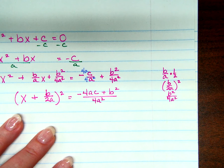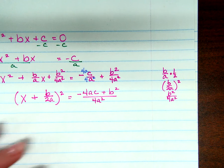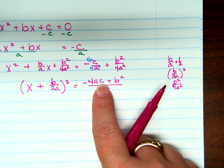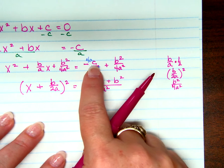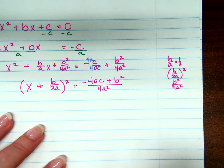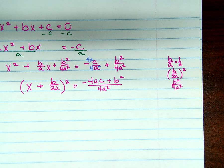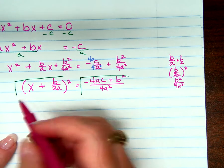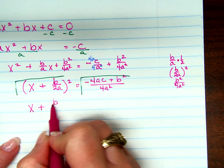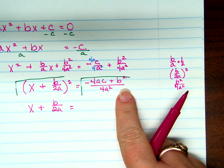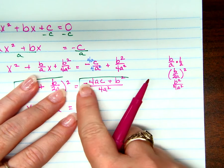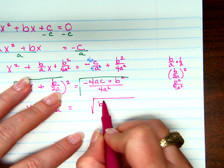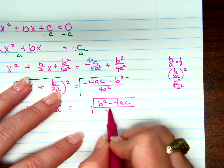Do you have any questions? Everybody still with me? Now what's the next step? Square root both sides. So if I square root that side and I square root this side — on this side, what do I get? x plus b over 2a. On this side, do you mind if I rearrange this a little bit? I don't like to start with a negative. So I'm just going to say the square root of b² minus 4ac over 4a².